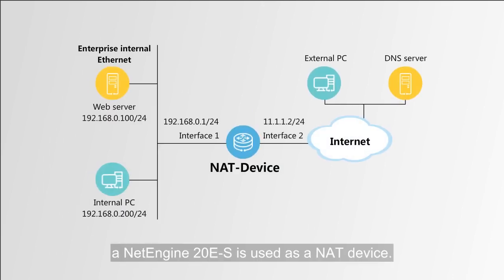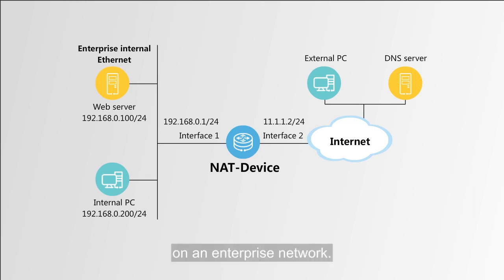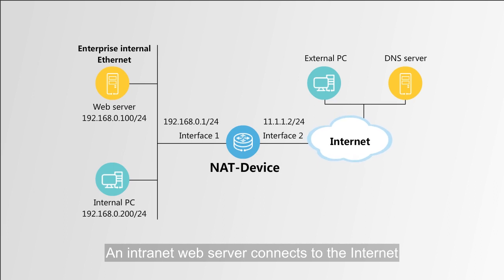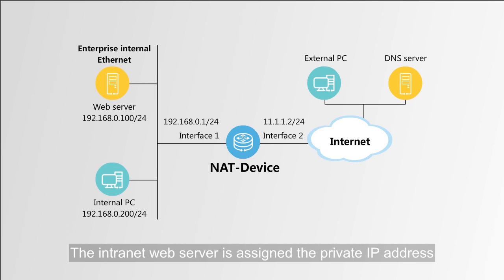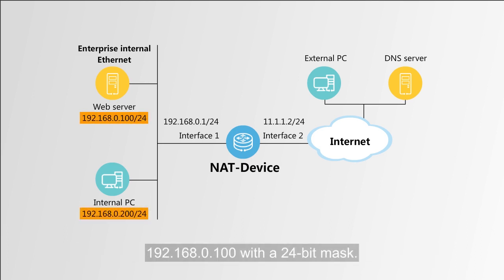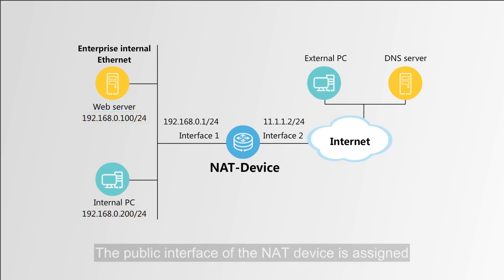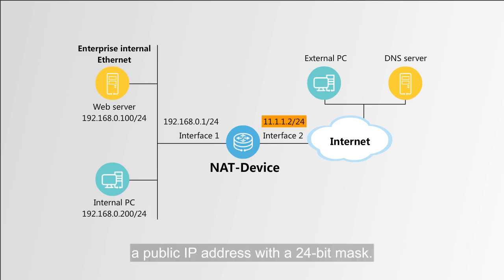In the following example, a NetEngine 20ES is used as a NITE device. The following figure shows the intranet web server on an enterprise network. An intranet web server connects to the internet through a NITE device to provide web services for intranet and extranet users. The DNS server is on the external network. The intranet web server is assigned the private IP address 192.168.0.100 with a 24-bit mask. The public interface of the NITE device is assigned a public IP address with a 24-bit mask.